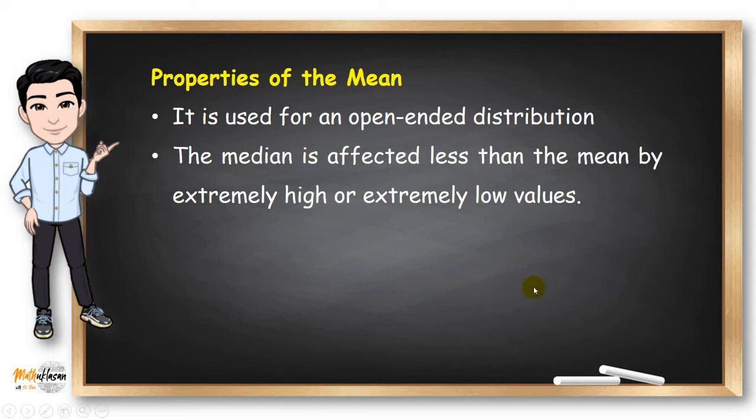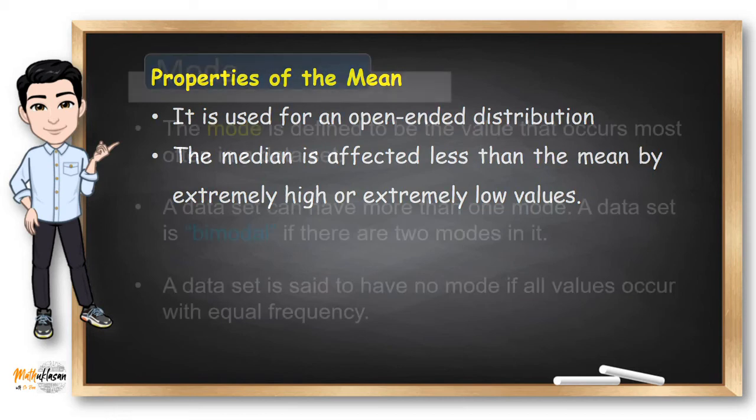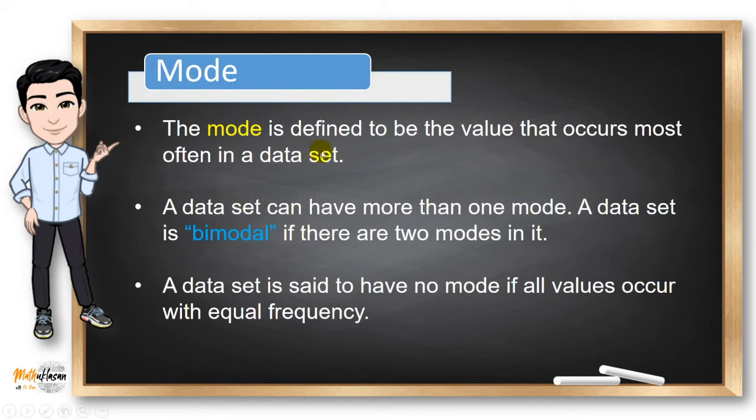Now, if you want to identify the most frequent data in the data set, you can use the mode. The data set can have more than one mode. A data set is bimodal if there are two modes in it. A data set is said to have no mode if all values occur with equal frequency.